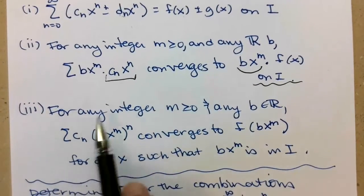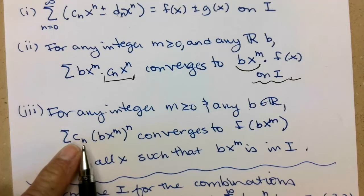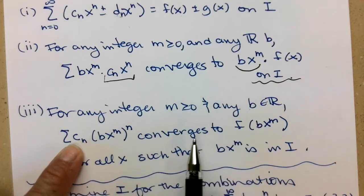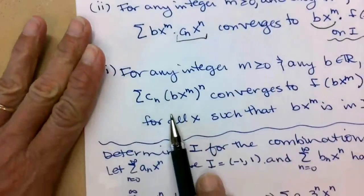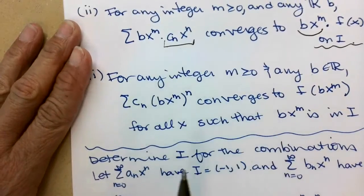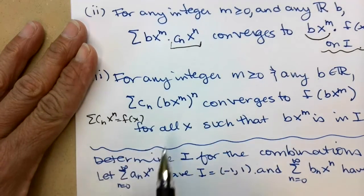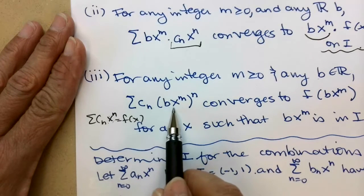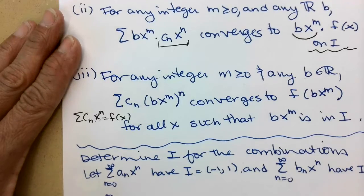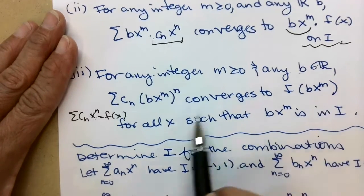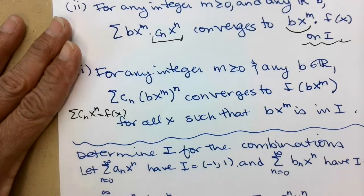This next one gets a little bit trickier. Same setup: m is the non-negative integer, b is a real number. Instead of multiplying the c sub n times x to the n by that extra factor, we're going to replace the x in our series with b times x to the m. So c sub n times x to the n converged to f of x, meaning if we replace the x in our power series with b times x to the m, that will converge to f evaluated at b times x to the m. The interval changes — it converges for all x such that b times x to the m is within i, so we may need to do a little algebra to find the new radius of convergence.